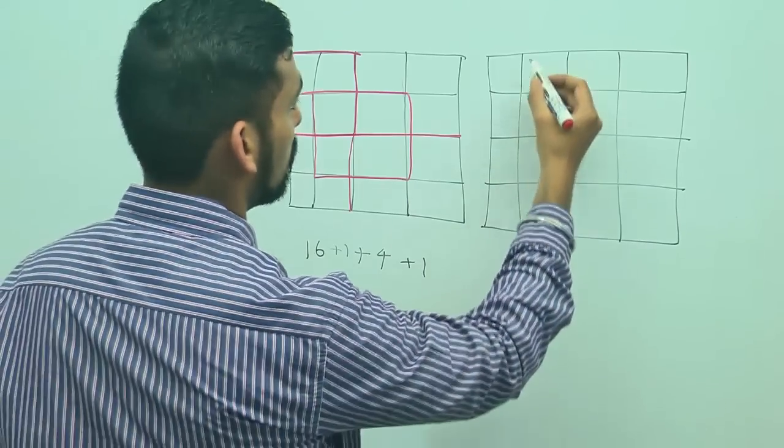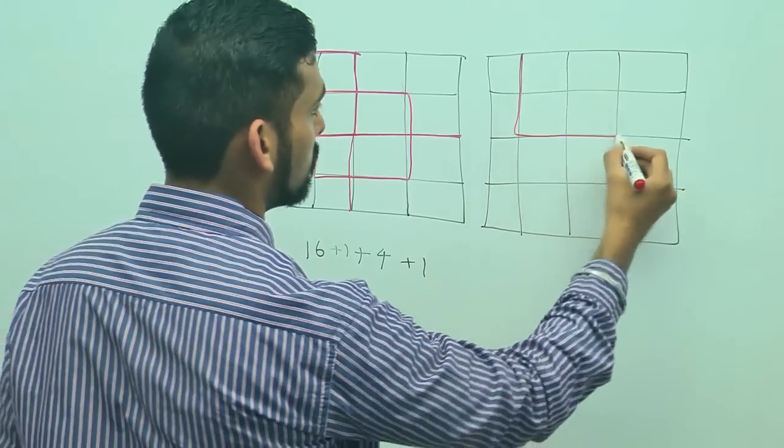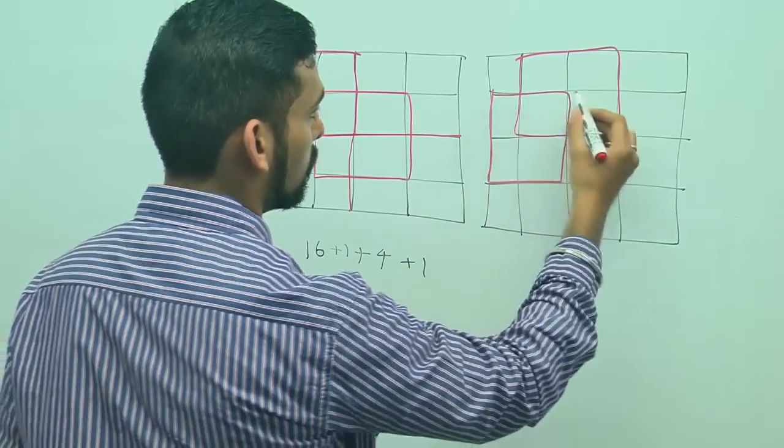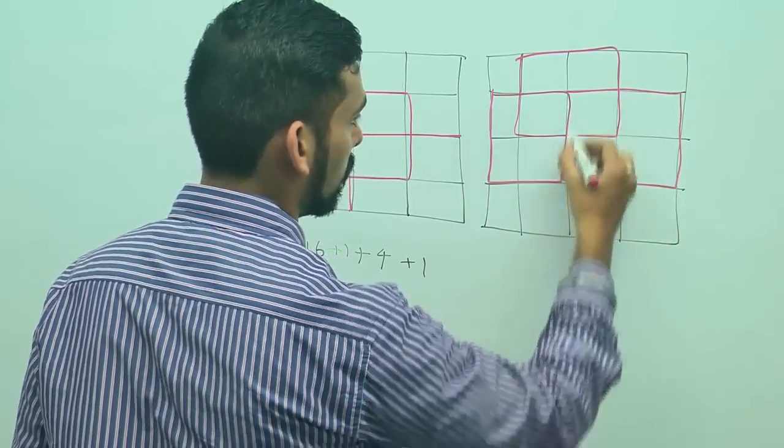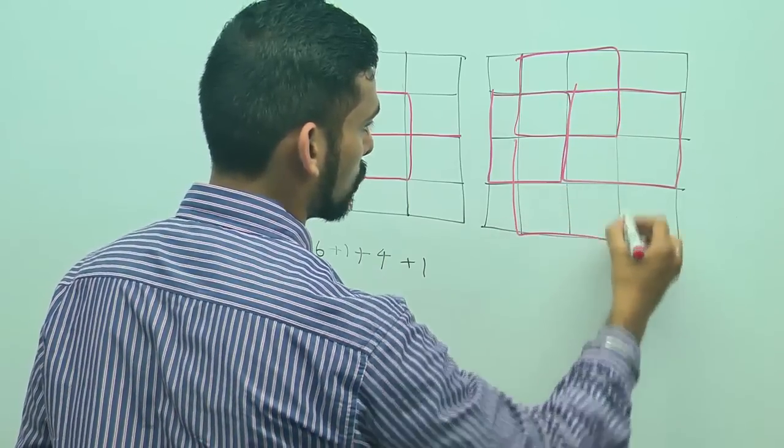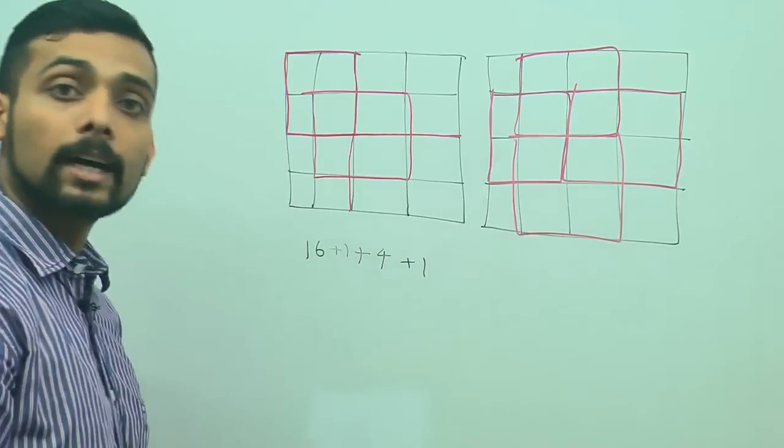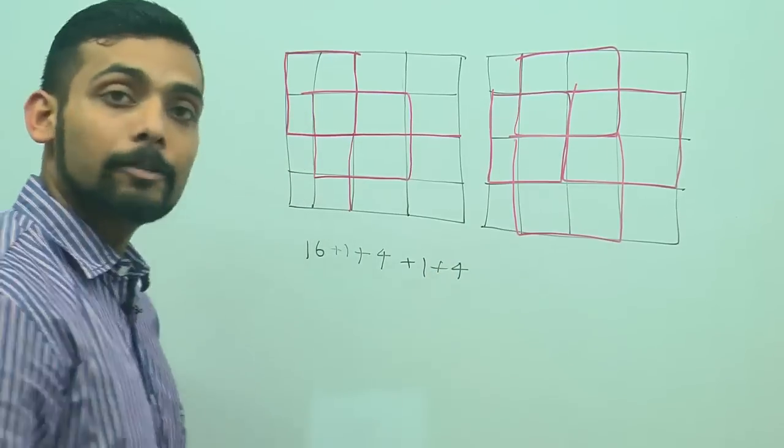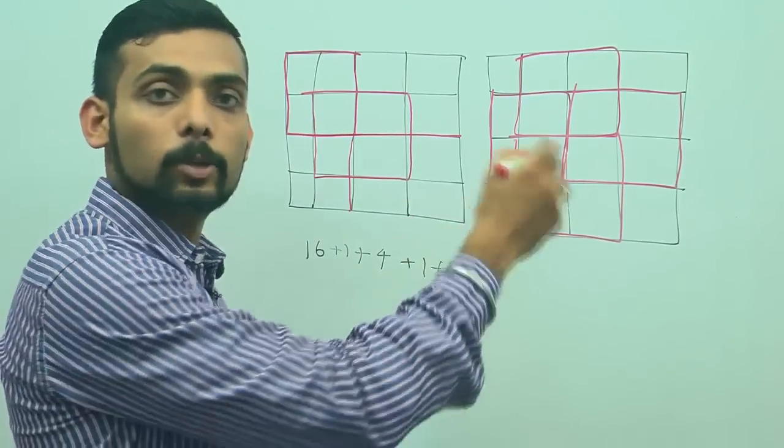Now, this one is a square, this is a square, this is a square and this is also a square. So, I get 4 more squares plus 4.